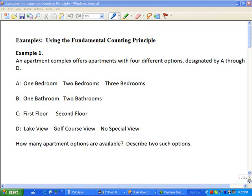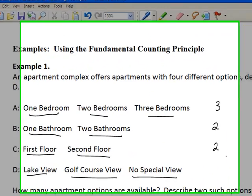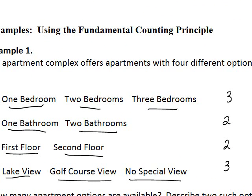Let's try a few examples using the fundamental counting principle. Example number one: an apartment complex offers apartments with four different options designated A through D. Option A is the total number of bedrooms — you can have one, two, or three bedrooms: three choices. Option B is the number of bathrooms — one or two bathrooms: two options. Option C is the floor — either first or second floor: two options. Option D is the view — lake view, golf course view, or no special view: three choices.